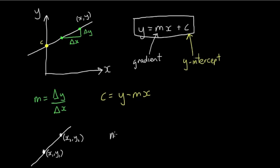Well, m is going to be the difference in the y coordinates. So that'll be y2 minus y1, divided by the difference in x coordinates. So that'll be x2 minus x1. That'll be m.